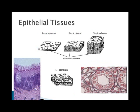Epithelial tissues are characterized by having one surface that is free — in other words, exposed to an environment of some sort — and the other adhered to a basement membrane. In simple epithelium, it's only one cell thick. It can be flat, which is called squamous; cuboidal, which looks like cubes; or columnar, which looks like columns in shape. Stratified epithelium has many layers, such as that found in human skin.